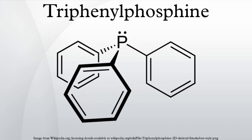Triphenylphosphine is a common organophosphorus compound with the formula P(C6H5)3, often abbreviated as PPh3. It is widely used in the synthesis of organic and organometallic compounds. PPh3 exists as relatively air-stable, colorless crystals at room temperature. It dissolves in non-polar organic solvents such as benzene and diethyl ether.